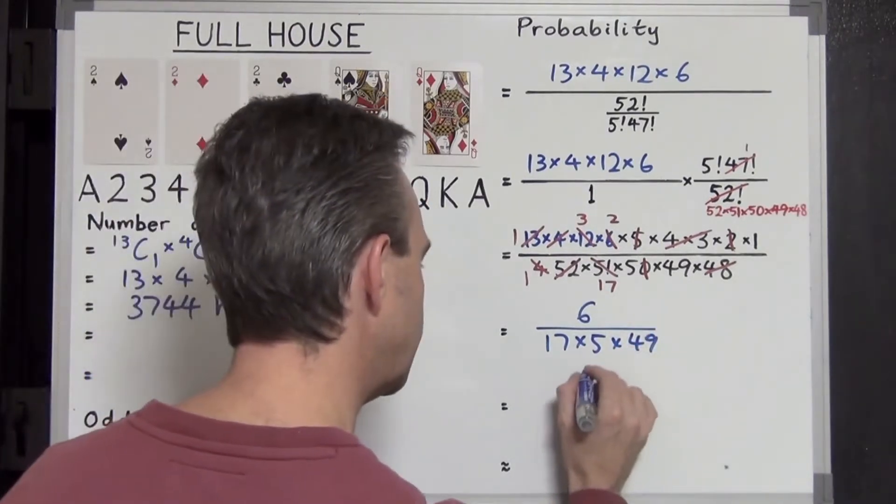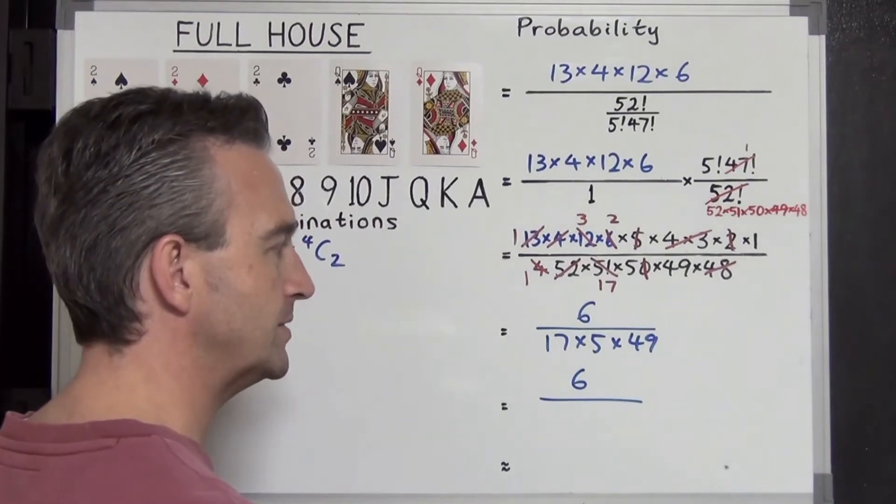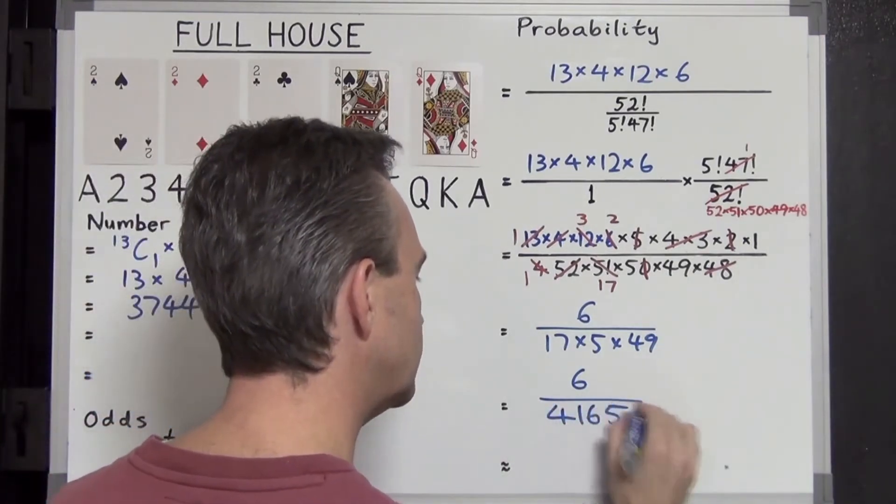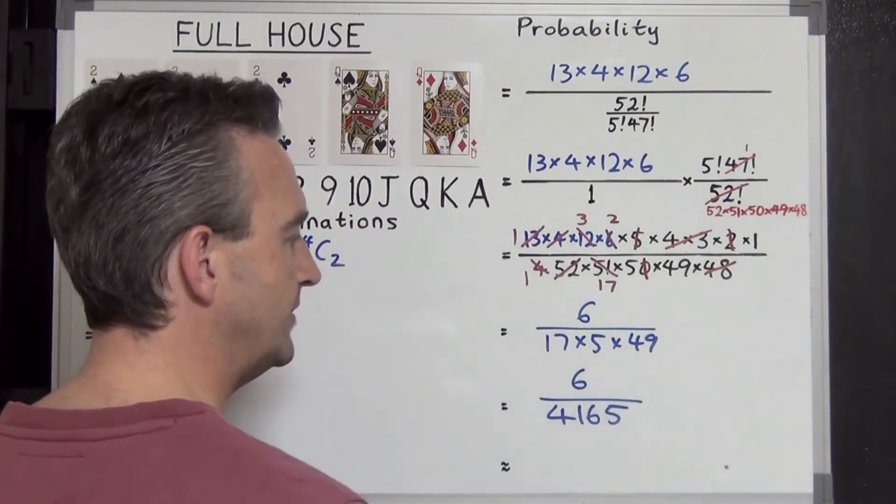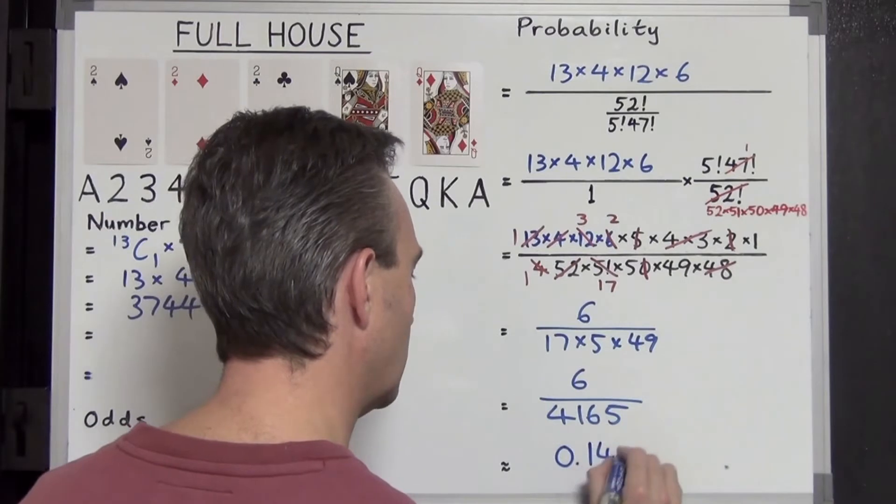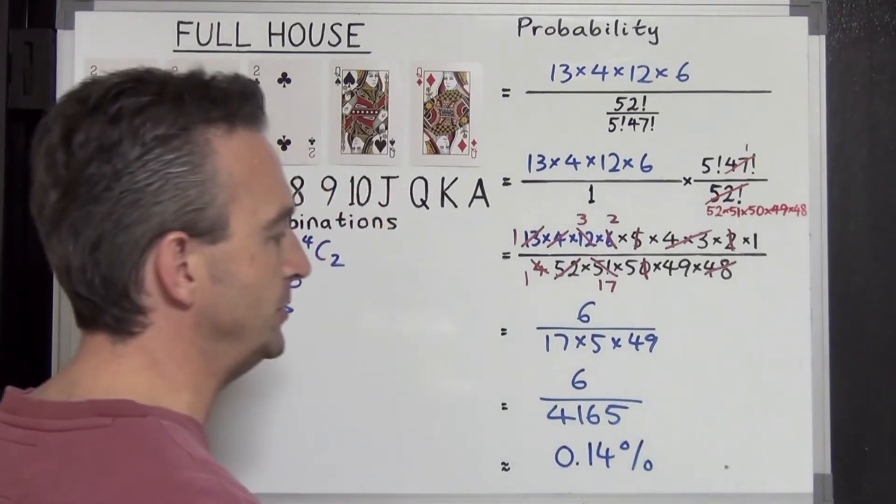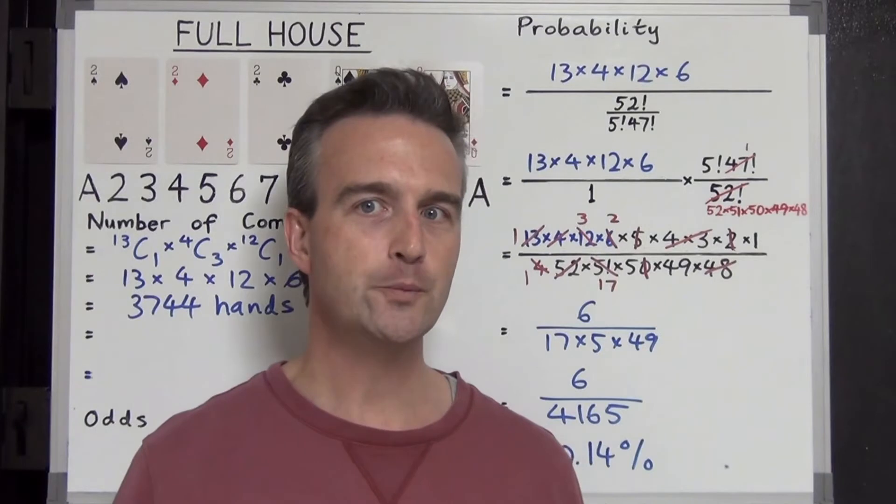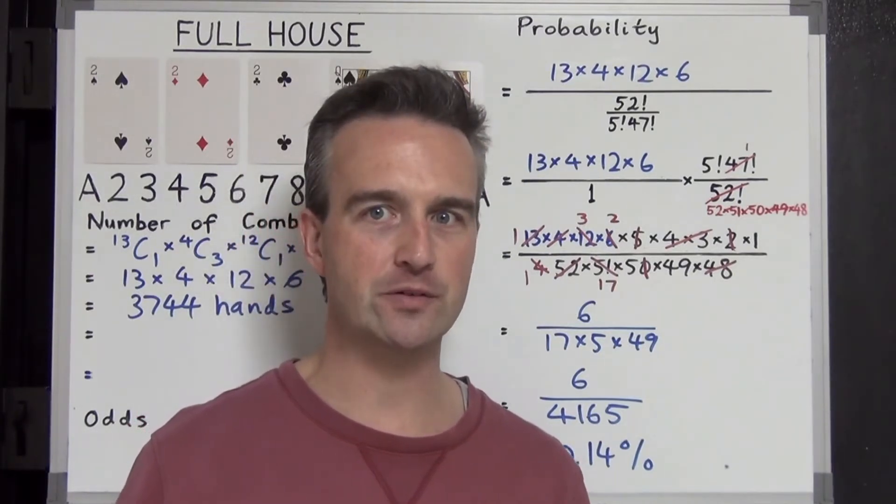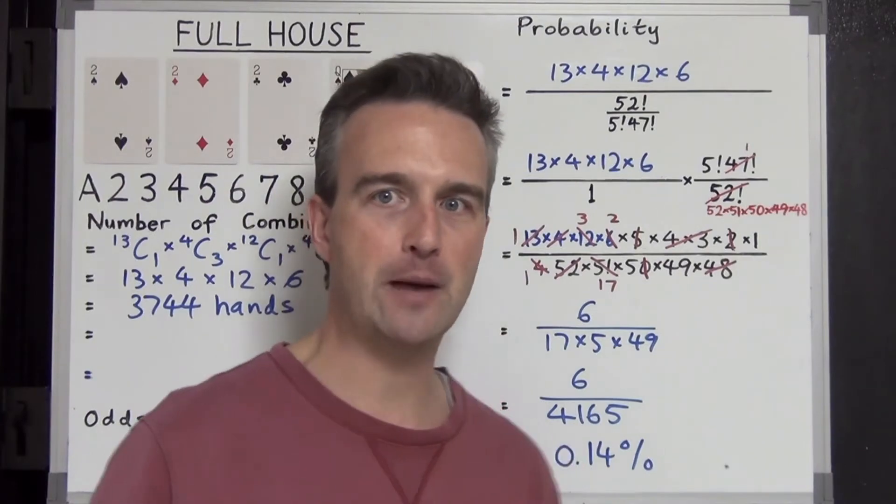Evaluating this, 6 stays on the top and on the bottom we get our old friend, if you've watched a few of these presentations already, the number 4,165, which does come up a fair bit. Doing the division and multiplying by 100 to get a percent, we're going to get 0.14 percent, which is very minute. So there's the probability of getting a full house, pretty rare. Almost one tenth of a percent, not going to happen very often.